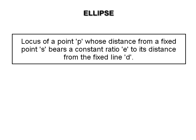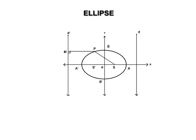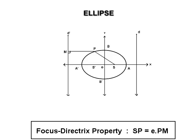Ellipse is the locus of point P whose distance from a fixed point S bears a constant ratio E to its distance from a fixed line D. The fixed point S is called focus, the fixed line D is called directrix, and the constant ratio E is called eccentricity of the ellipse, where 0 less than E less than 1. If PM is perpendicular to the directrix D, then by the focus-directrix property, SP equals E times PM.